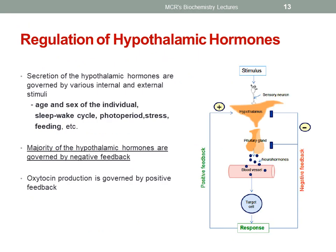Now let's see about the regulation of hypothalamic hormones. The secretion of hypothalamic hormones is governed by various internal and external stimuli like age, sex of the individual, sleep-wake cycle, photoperiod, stress, feeding, etc. The majority of the hypothalamic hormones are governed by negative feedback, while oxytocin production is governed by positive feedback.